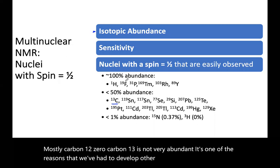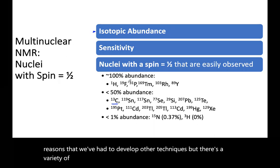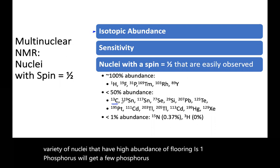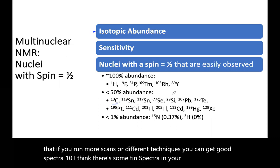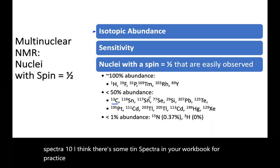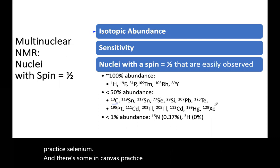There's a variety of nuclei that have high abundance. So fluorine is one. Phosphorus, we'll look at a few phosphorus NMR. Rhodium. There's some more that if you run more scans or different techniques, you can get good spectra. Tin, I think there's some tin spectra in your workbook for practice. Selenium, and there's some in Canvas practice for tin as well.